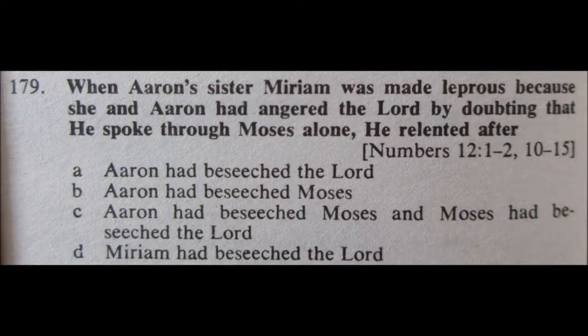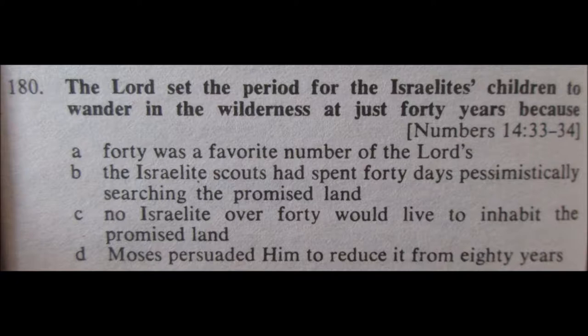180, the last one. The Lord set the period for the Israelites' children to wander in the wilderness at just 40 years because: A, 40 was a favorite number of the Lord's; B, the Israelite scouts had spent 40 days pessimistically searching the promised land; C, no Israelite over 40 would live to inhabit the promised land; or D, Moses persuaded him to reduce it from 80 years.